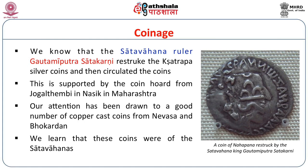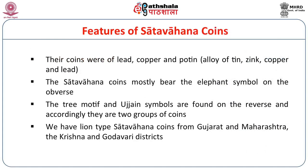Our attention has been drawn to a good number of copper-cast coins from Nevasa and Bhokardan — coins of the Satavahanas. The metals used in producing their coins were lead, copper, and potin. Potin is an alloy of tin, zinc, copper and lead. The Satavahana coins mostly bear the elephant symbol on the obverse; the tree motif and Ujjain symbols are found on the reverse.